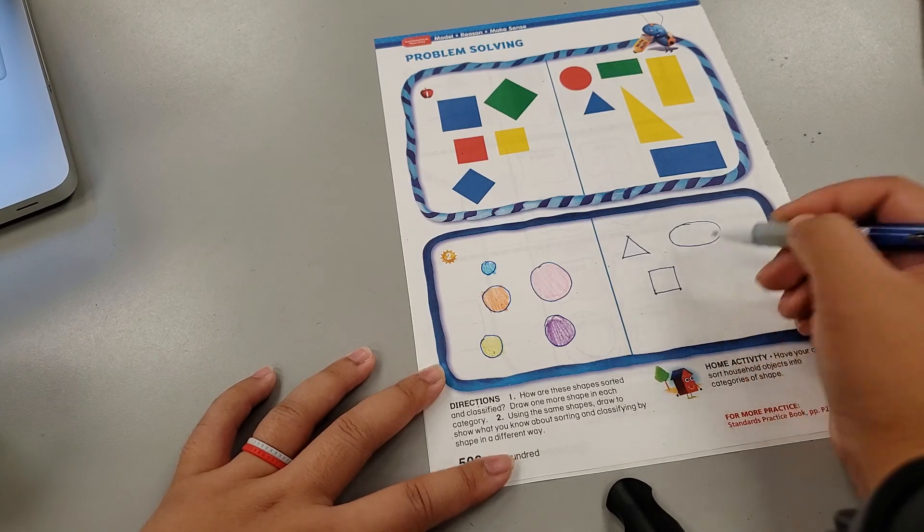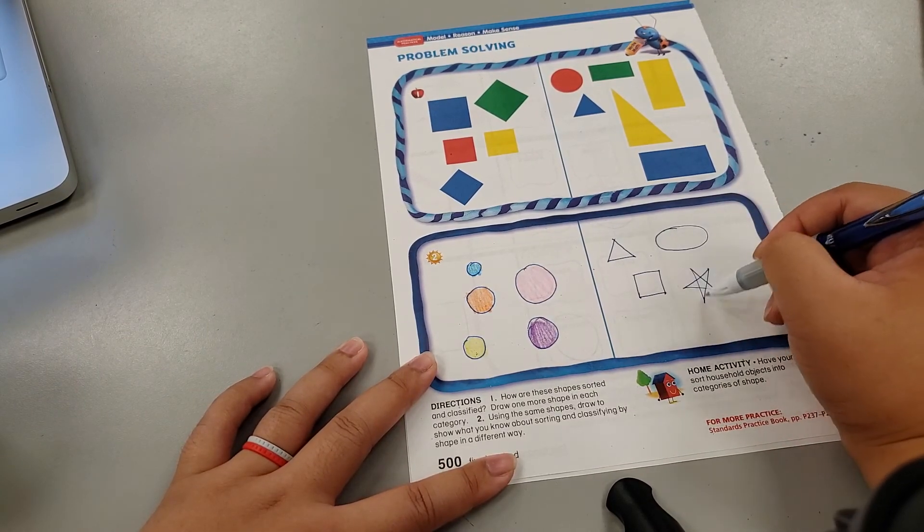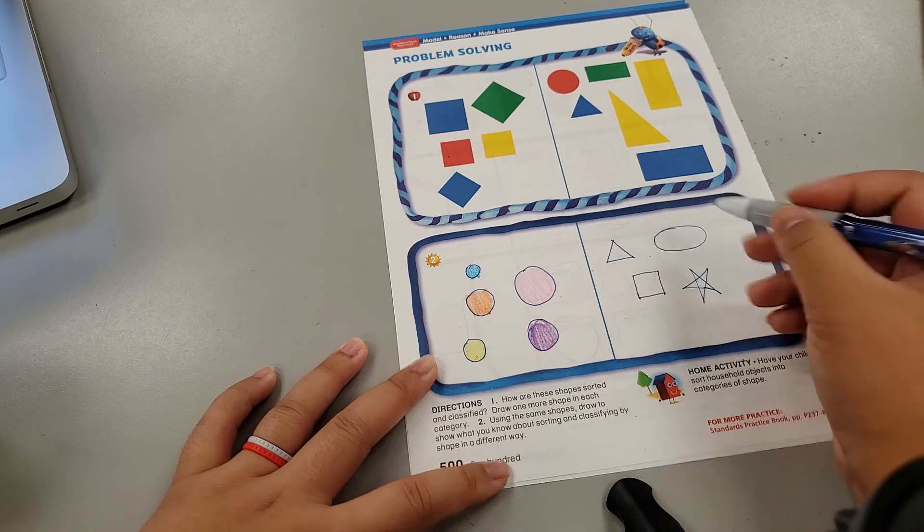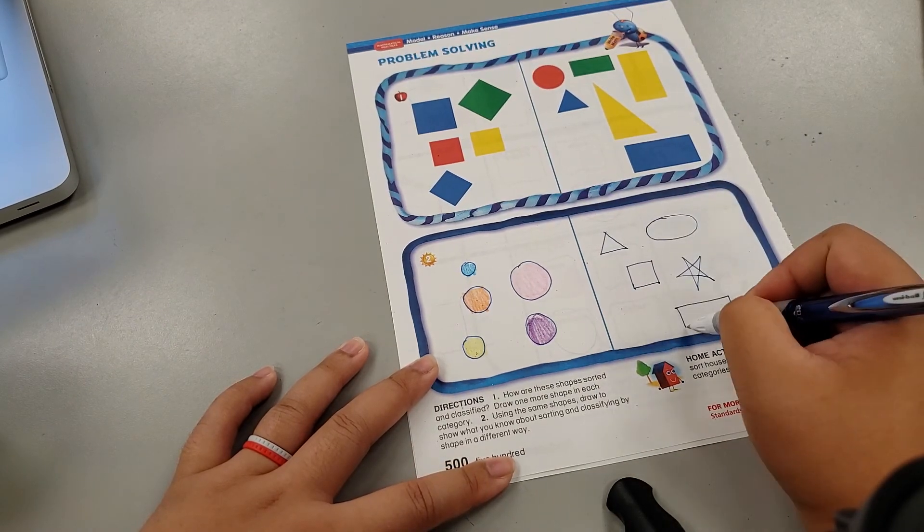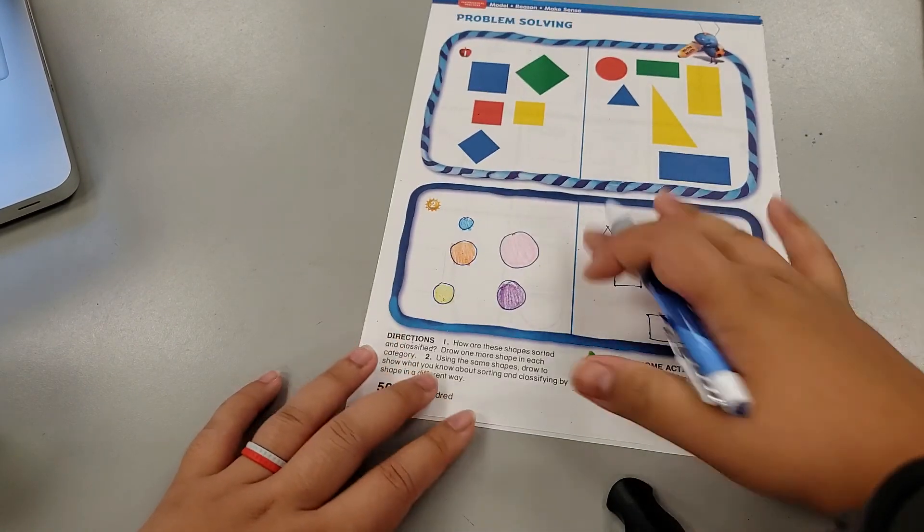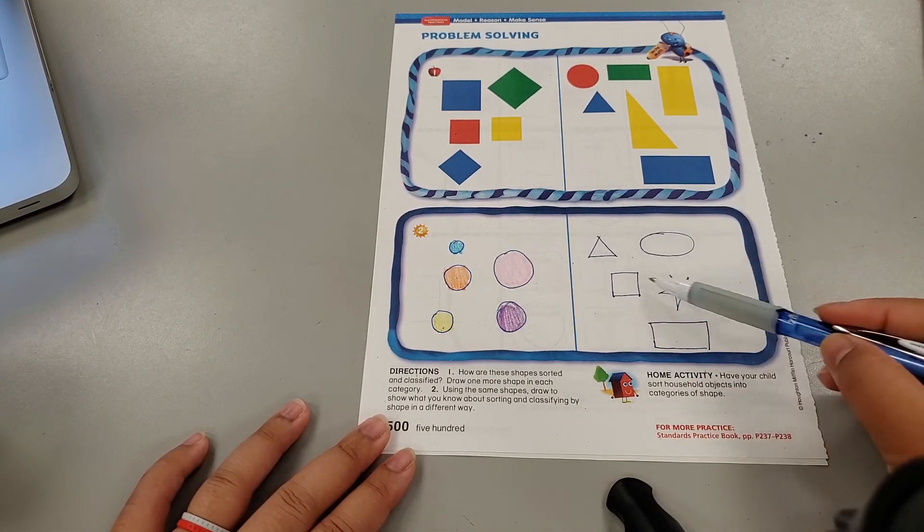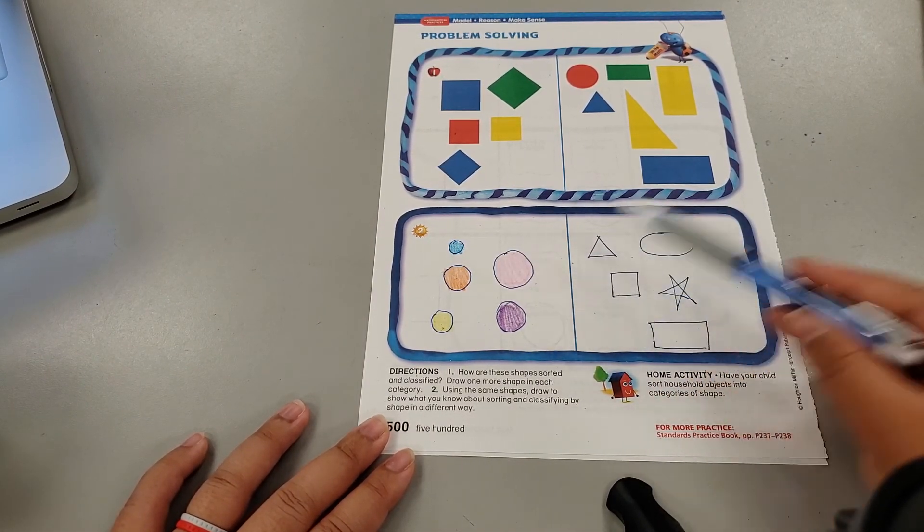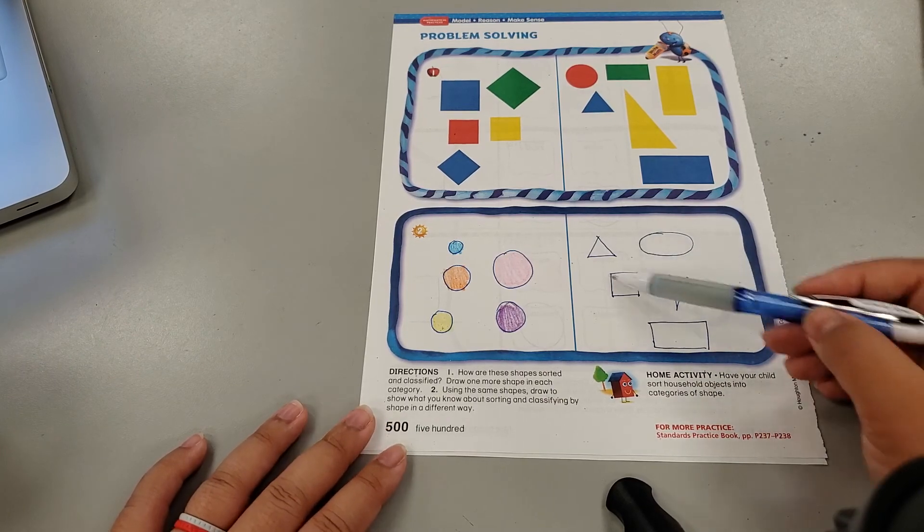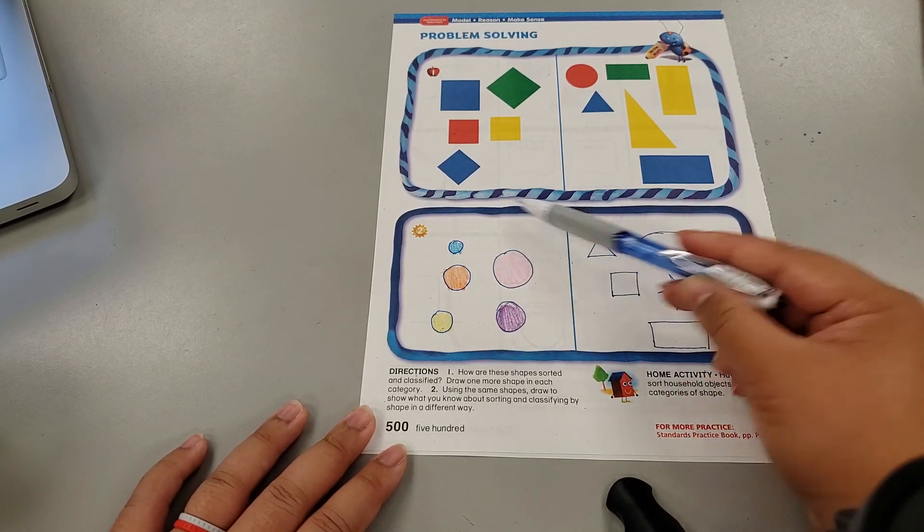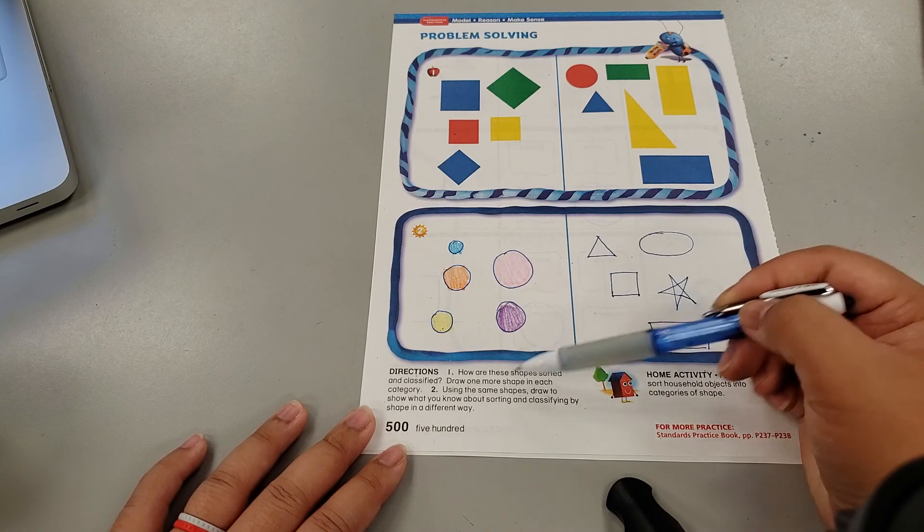So I can put that there. Squares are not circles. Stars are not circles. Rectangles are not circles. And I can color those any color I'd like. Even if it's orange like the ones on this side. Can it live on this side of the sorting mat? No. Because the rule for this sorting mat is to sort by shape.